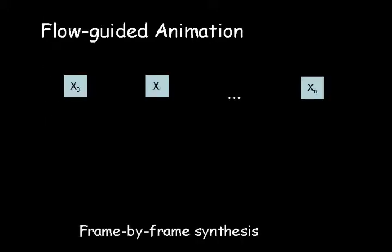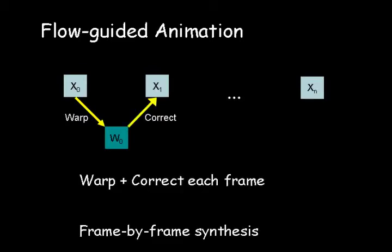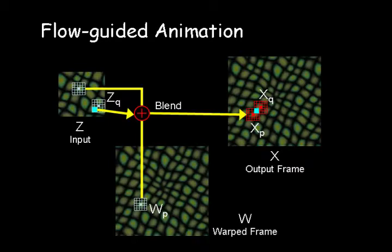For flow-guided animation, we perform frame-by-frame synthesis. We first warp the previous frame according to the flow, and then correct it so that it appears to be a sample from the input texture. The optimization is modified to blend neighborhoods from the warped frame in addition to the input texture, while computing the output texture.